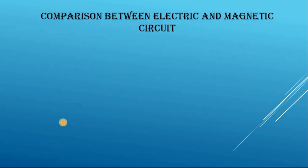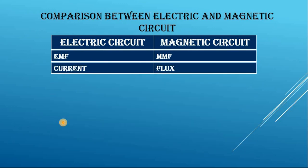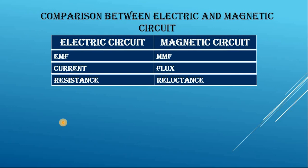Now let's do the comparison between an electric circuit and a magnetic circuit. In an electric circuit, the driving force of current is EMF, which is electromotive force. In a magnetic circuit, the driving force of flux is MMF, which is magnetomotive force. When EMF is applied, there is a flow of current in an electric circuit, and when MMF is applied, there is a flow of flux in a magnetic circuit. The opposition offered to the flow of current is resistance in an electric circuit, and the opposition offered to the flow of flux is reluctance in a magnetic circuit.